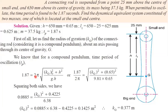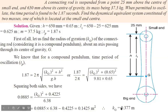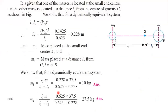For a compound pendulum, the time period formula is: T = 2π √((kg² + h²) / (g × h)). We know the time period, g = 9.81, and h in meters. Substituting all values and squaring both sides to isolate kg, we determine the radius of gyration as 0.377 meter. It is a simple basic calculation.